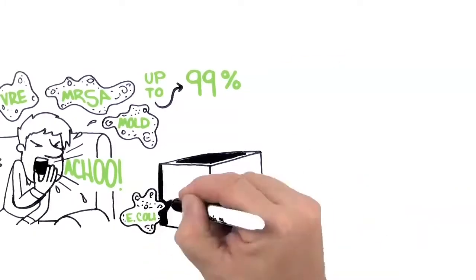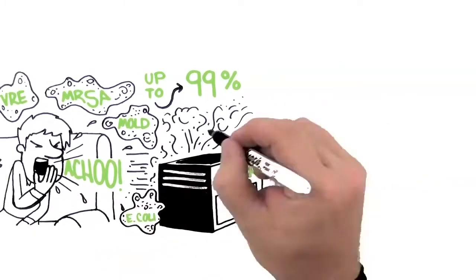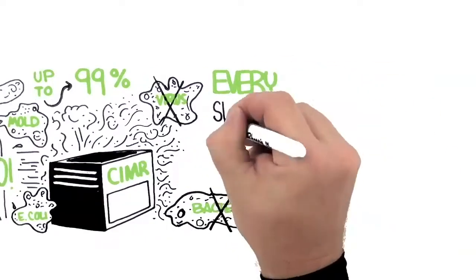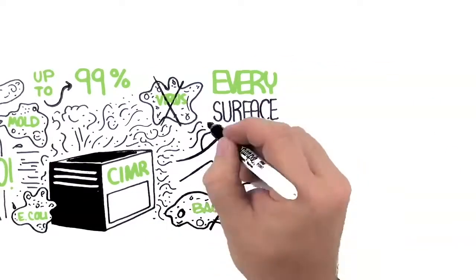Fortunately, Simmer infection control technology kills up to 99.9% of bacteria and viruses in the air and on every surface. Simmer goes everywhere air can travel.